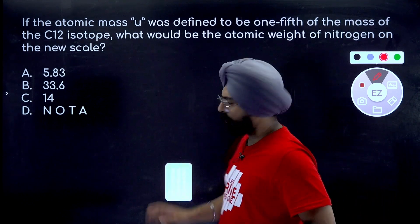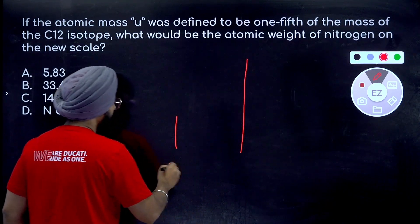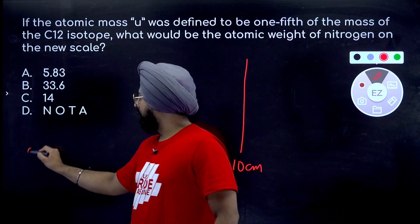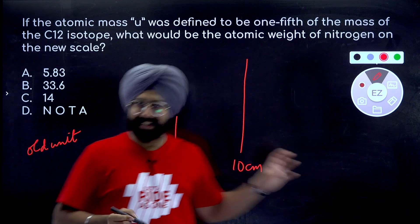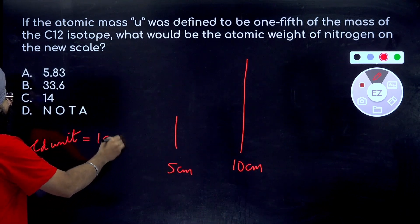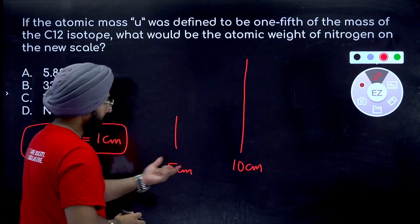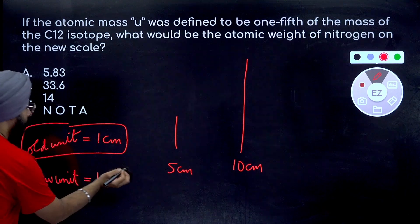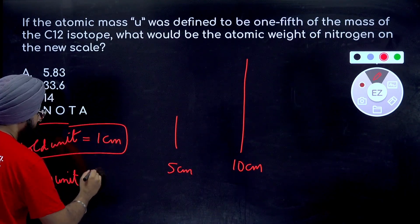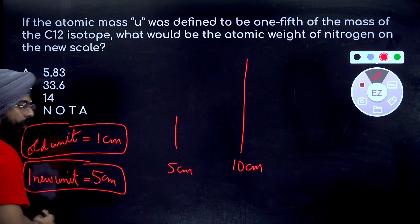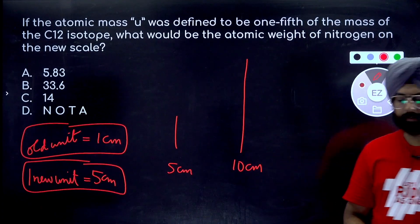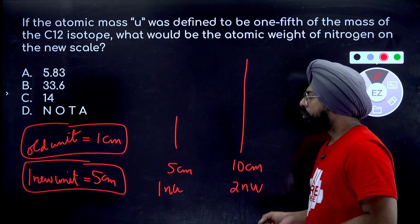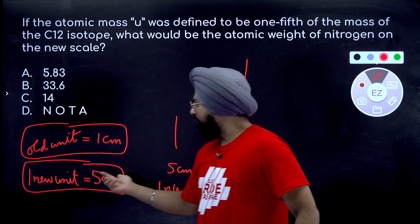So my dear friends, imagine a situation where you have two people, one guy is 5 centimeter, 10 centimeter, a random example. So if the old unit in which I'm measuring it right now is 1 centimeter, 5 centimeter, 10 centimeter, now if I define one new unit is equal to 5 centimeters. Do you realize this is one new unit, this guy is two new units.